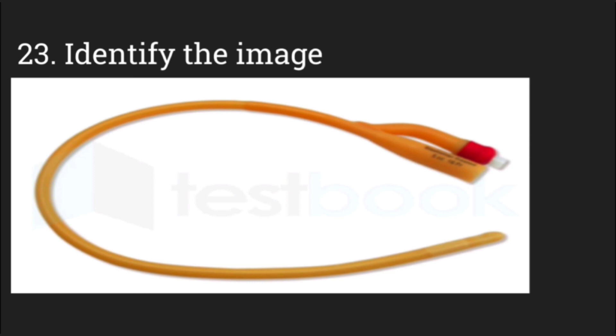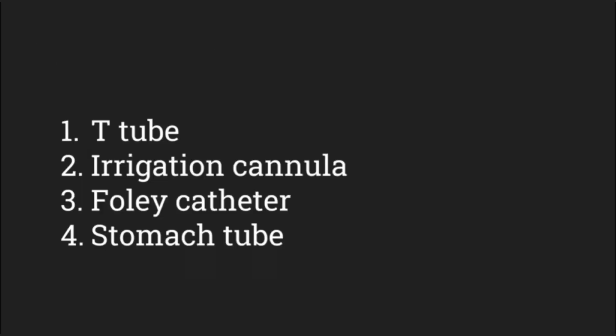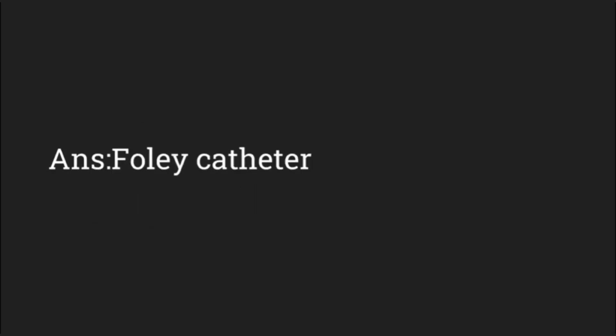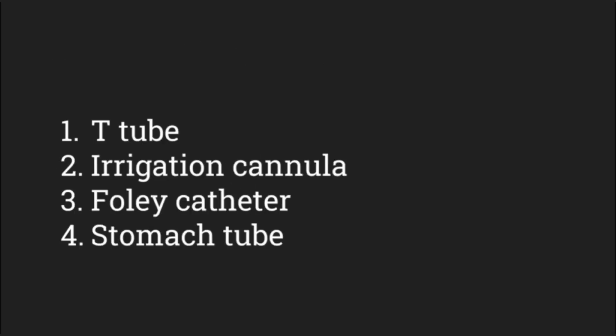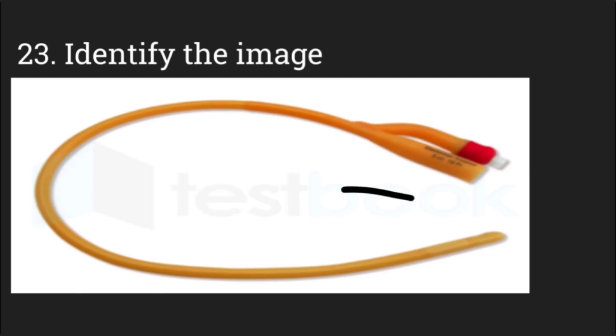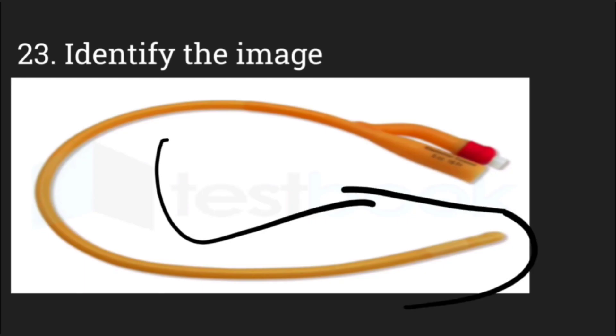Identify the image — options: T-tube, irrigation cannula, Foley's catheter, stomach tube. The answer is Foley's catheter. This is a Foley's catheter, which is used to drain urine from the bladder.